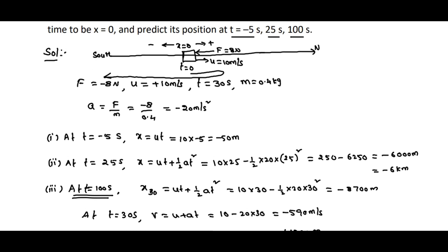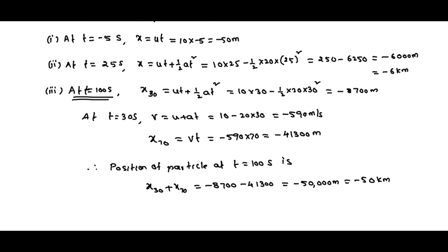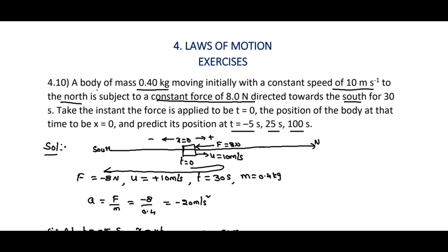So to summarize: at t equals minus 5 seconds, position x equals minus 50 meters from the origin; at t equals 25 seconds, position is minus 6 kilometers from x equals 0; and at t equals 100 seconds, the position is minus 50 kilometers from x equals 0. Thank you.